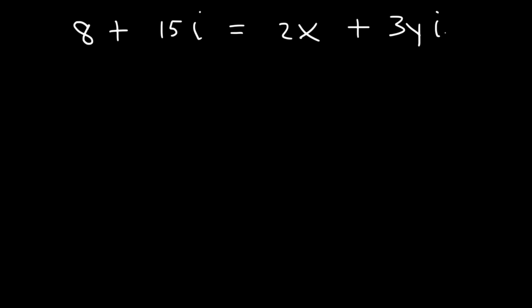In order to solve it, we need to identify the real portion of the equation and the imaginary part. The imaginary part is the part that has the imaginary number i. The real portion doesn't have i.